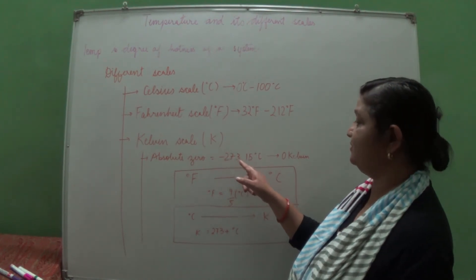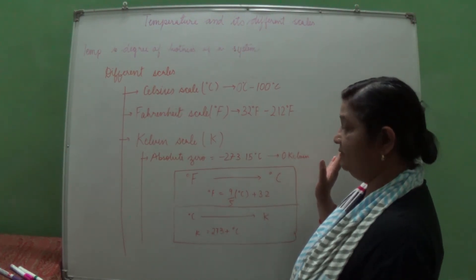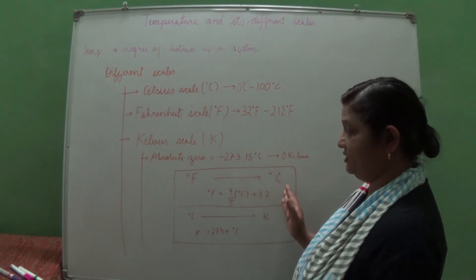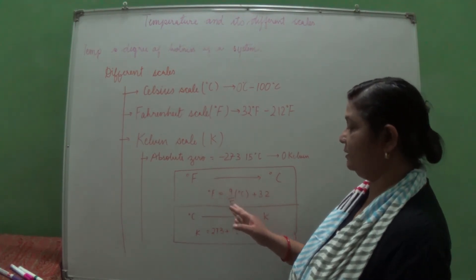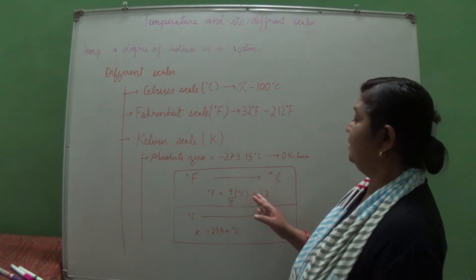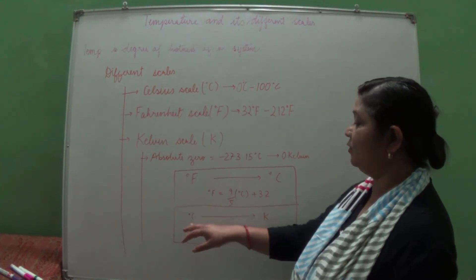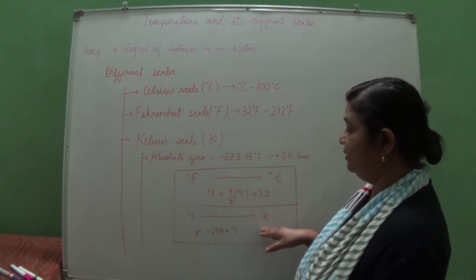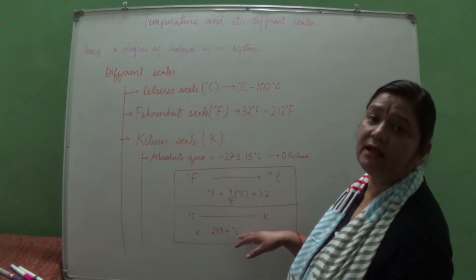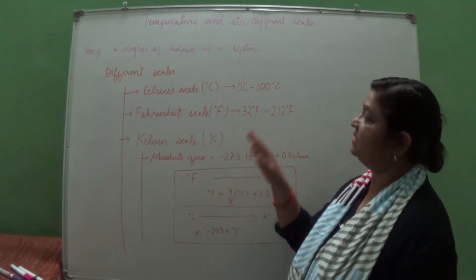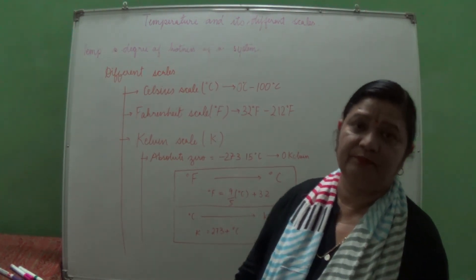The Kelvin scale uses absolute zero, which is minus 273.15 degrees Celsius or 0 Kelvin. To convert Fahrenheit from Celsius, the formula is: degrees Fahrenheit equals 9/5 times degrees Celsius plus 32. To convert from Celsius to Kelvin, the formula is: Kelvin equals 273 plus degrees Celsius. This covers the temperature scales and the change of state.